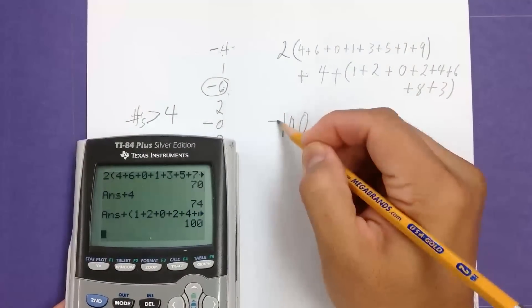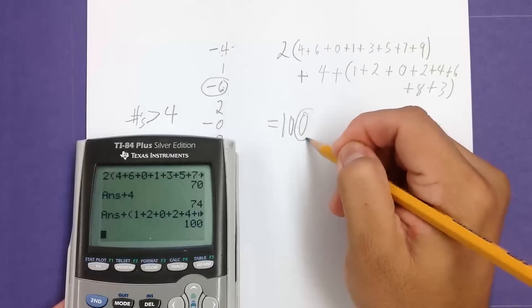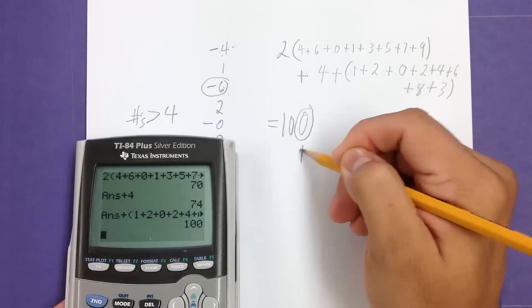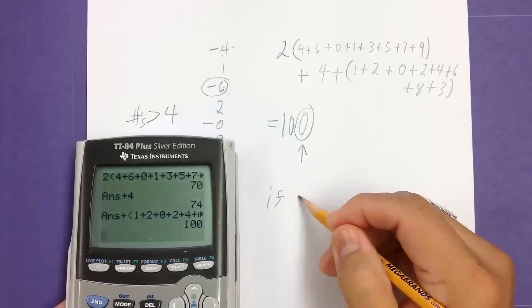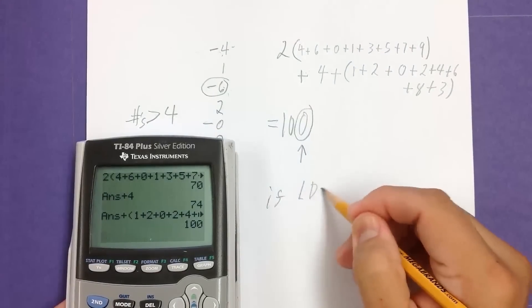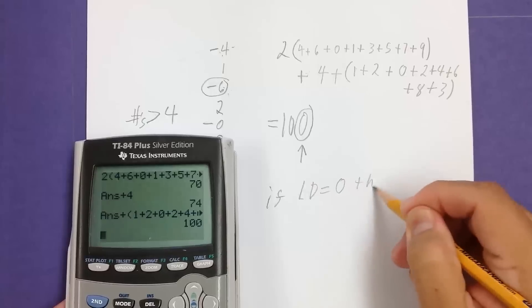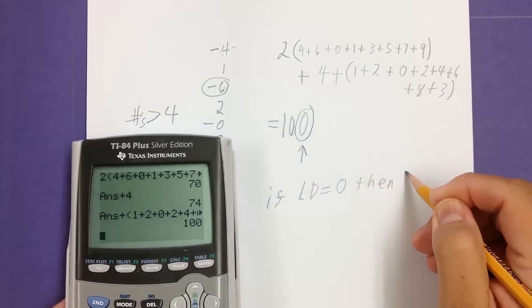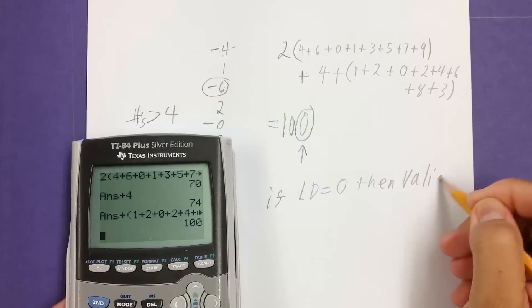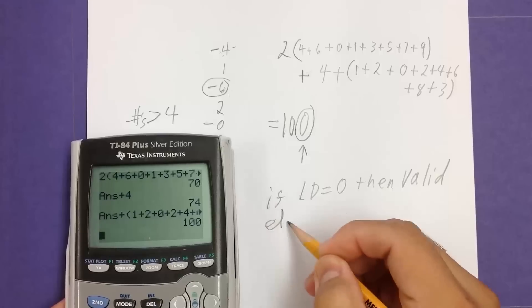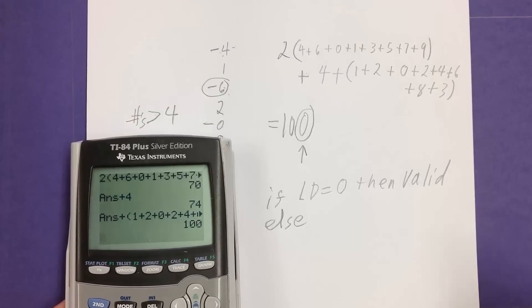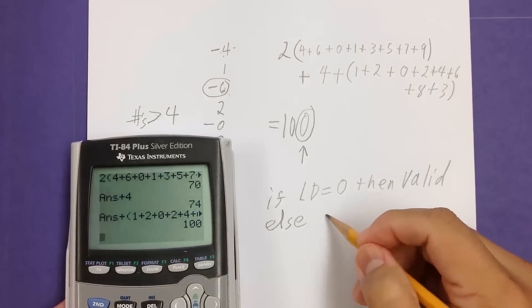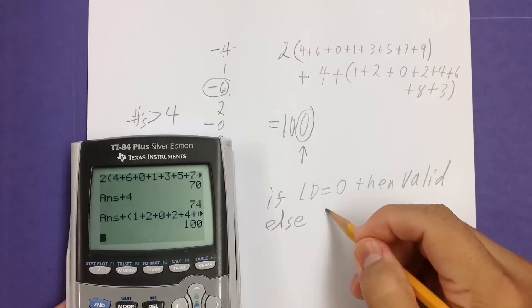And it's the same thing as we looked into the UPC codes. If the last digit is 0, if last digit is equal to 0, then valid. Else, meaning anything else, if it's like a 2, 3, 4, 5, 6, 7, 8, 9, else, then it's invalid.